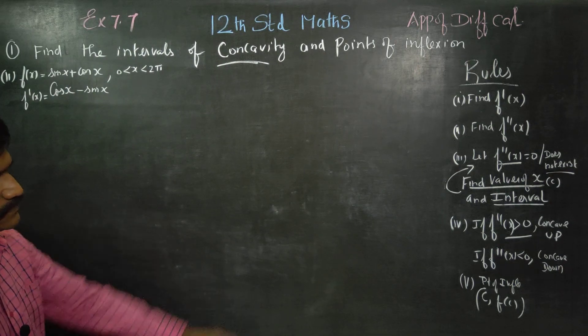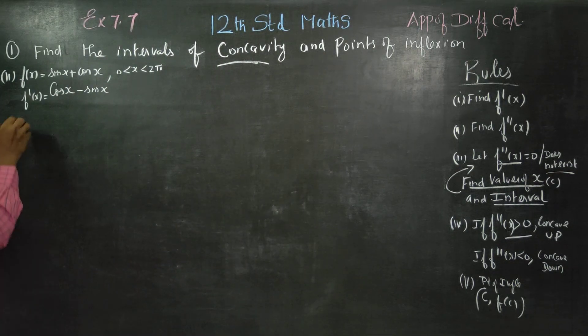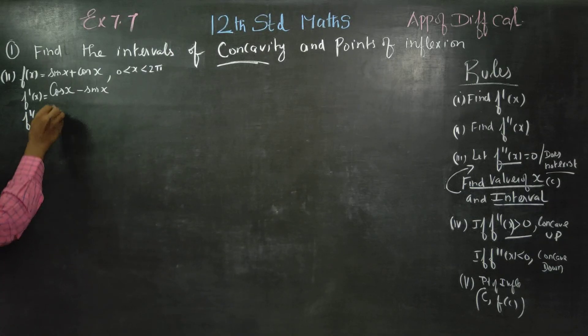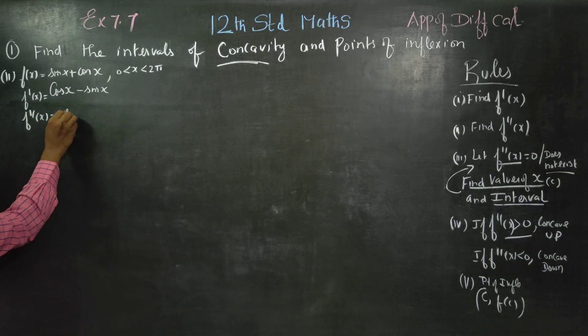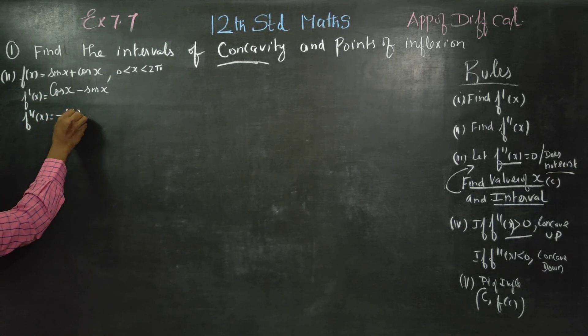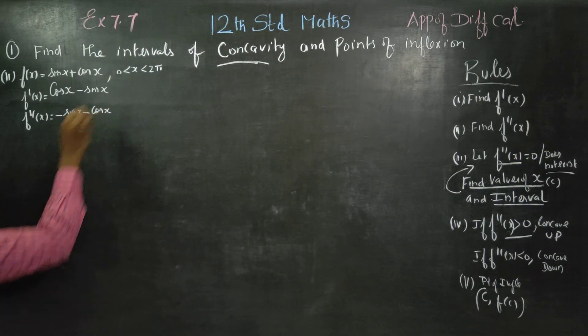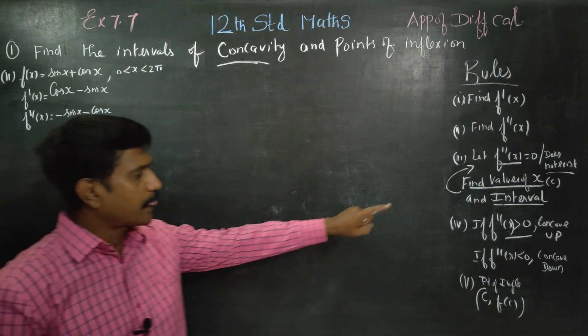Next, the second differentiation, f double dash x. cos x differentiated gives minus sin x. Minus sin x differentiated gives minus cos x. That is going to be f double dash x equals minus sin x minus cos x.